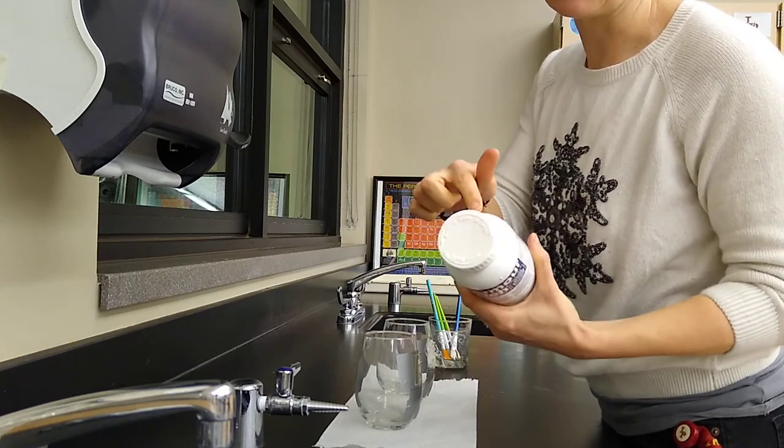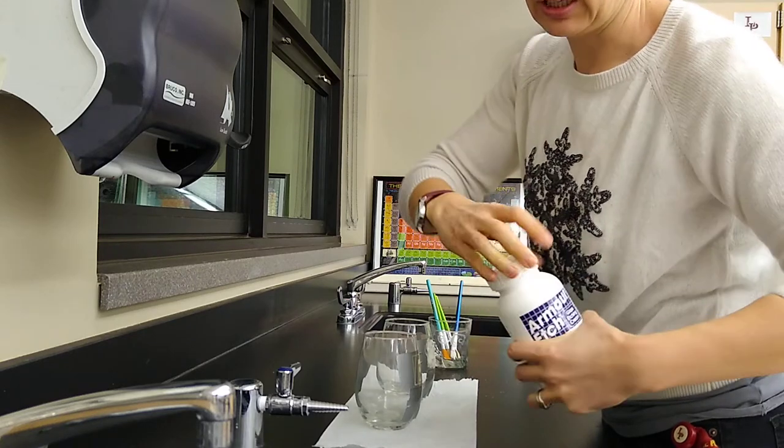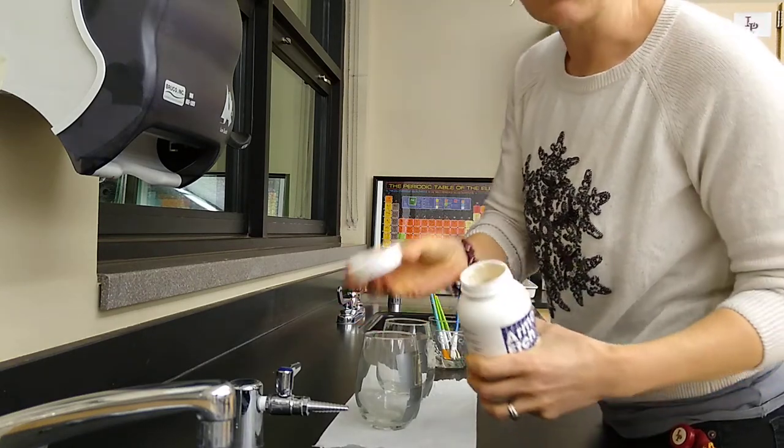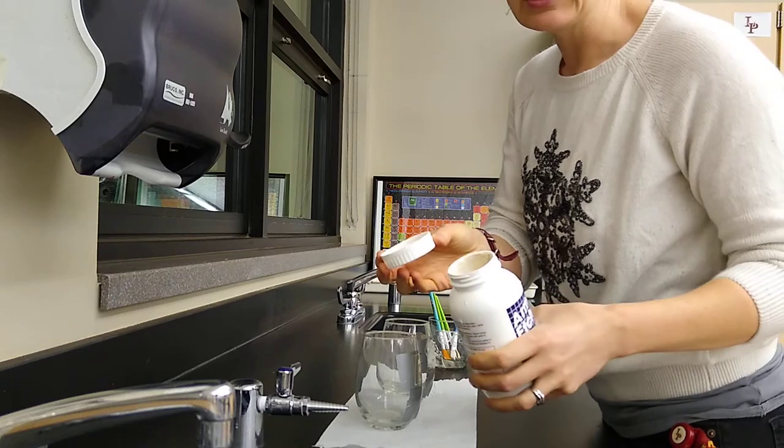What you're going to need to do is open it. It's got one of those child lids so you'll have to push and twist to open that up. When you're done, please put the lid back on tightly so that it won't dry out and we can use it again.